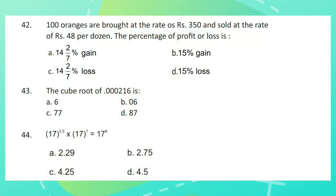Question 42. 100 oranges are bought at the rate of Rs. 350 and sold at the rate of Rs. 48 per dozen. The percentage of profit or loss is?